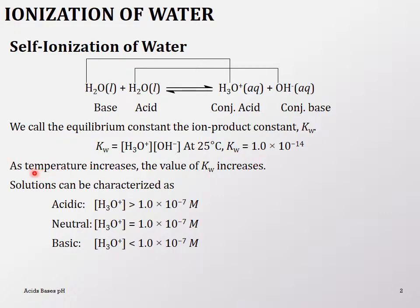As a side note, as temperature increases the value of Kw increases. But right now, just remember that for acidic solutions the hydronium ion concentration is greater than 1×10⁻⁷.